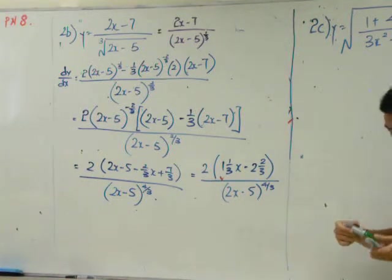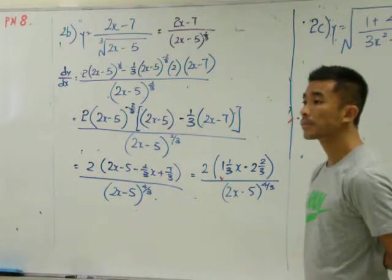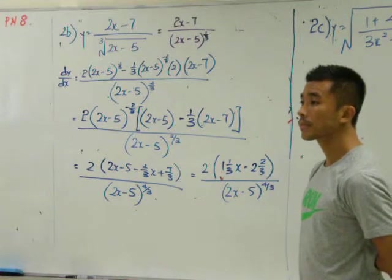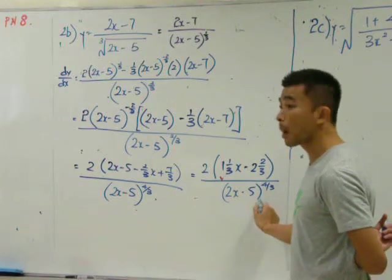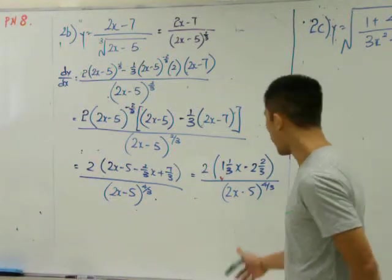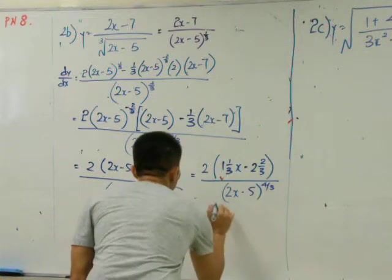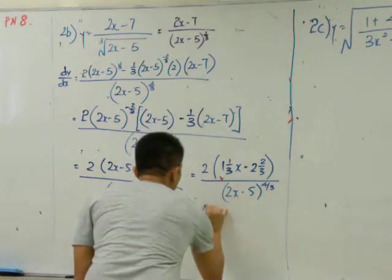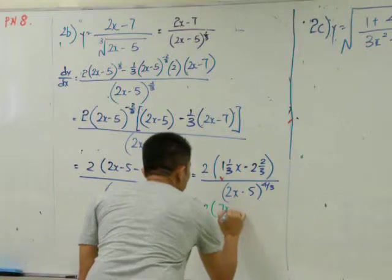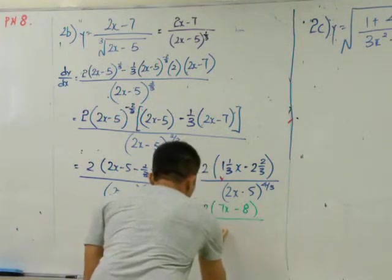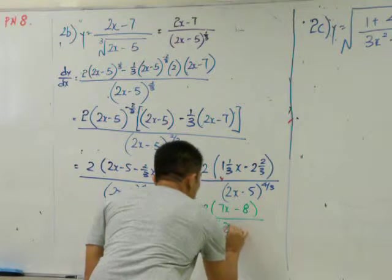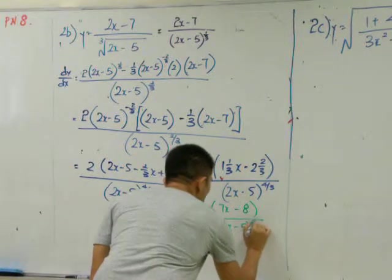Can we leave our answer this way? What must we do? Andy, what must we do? Times 3 on top. You also need to multiply by 3 below. Multiply by 3 on top, multiply by 3 below.